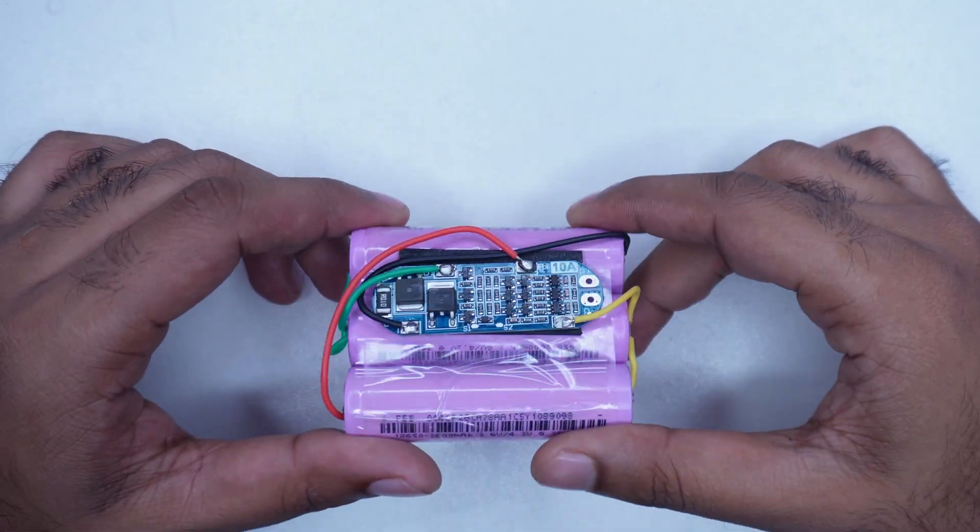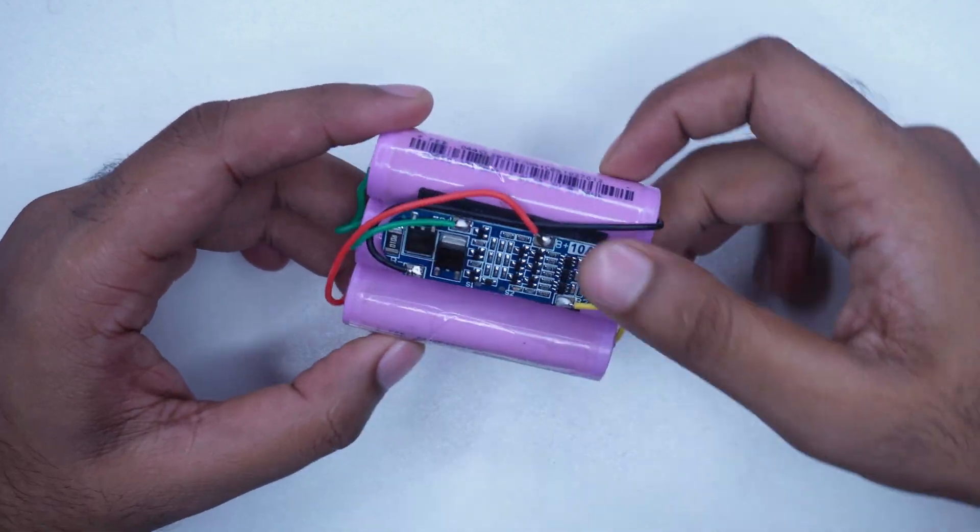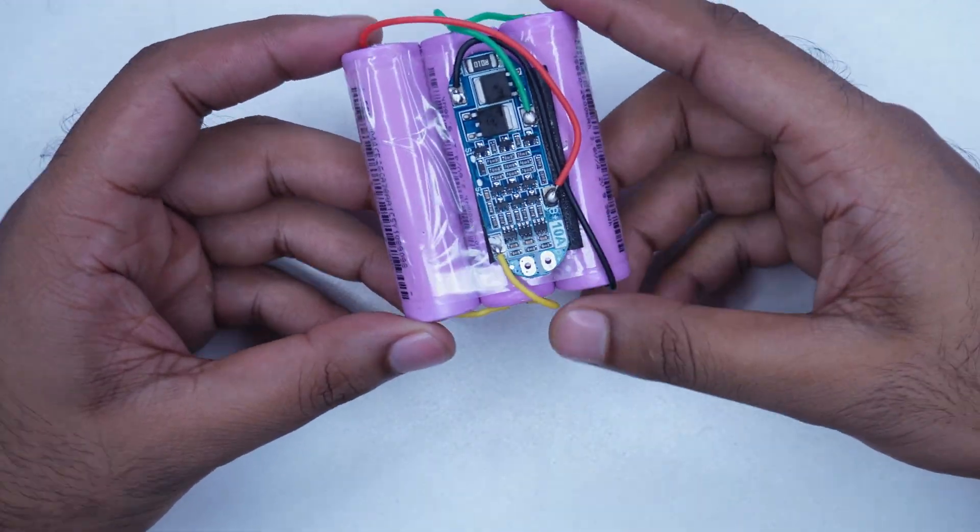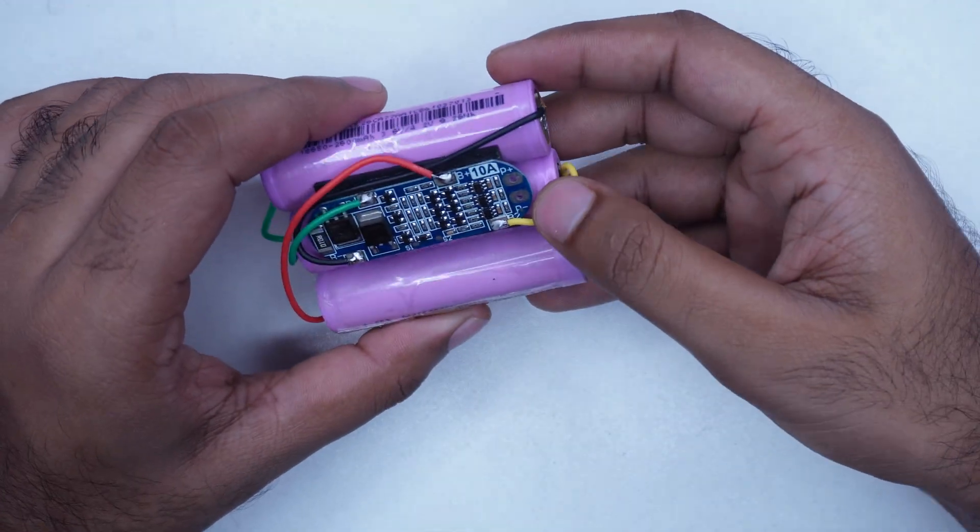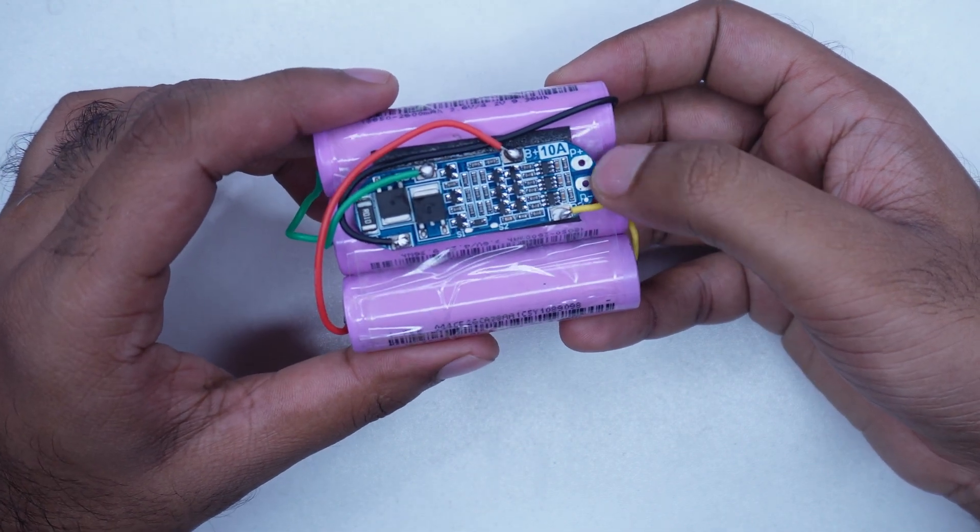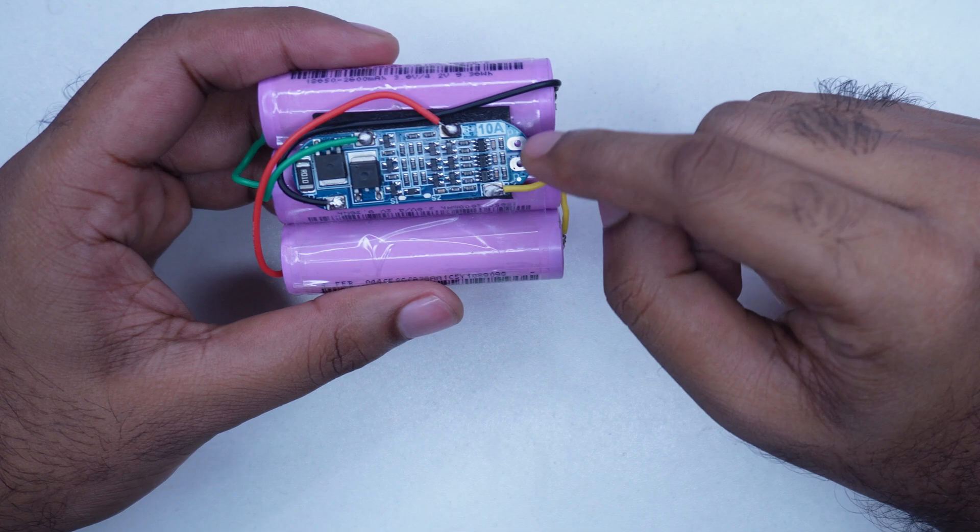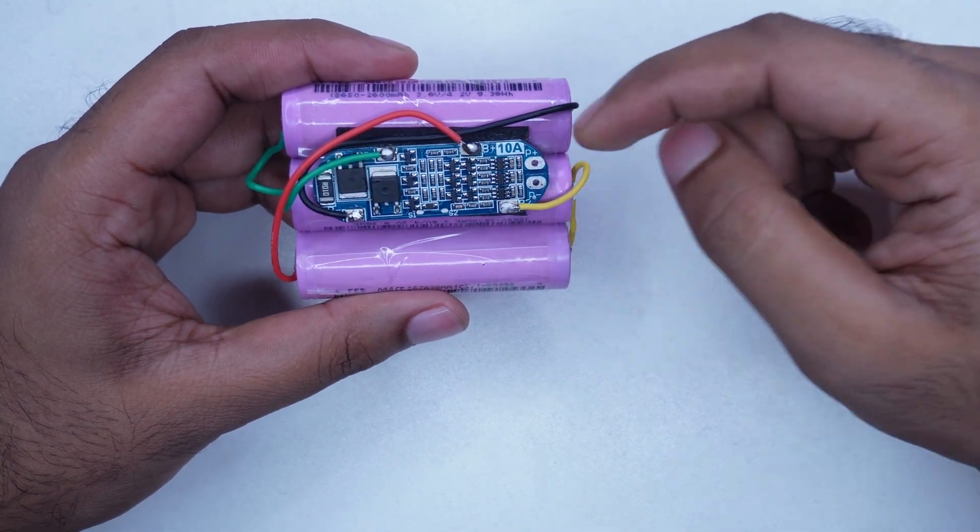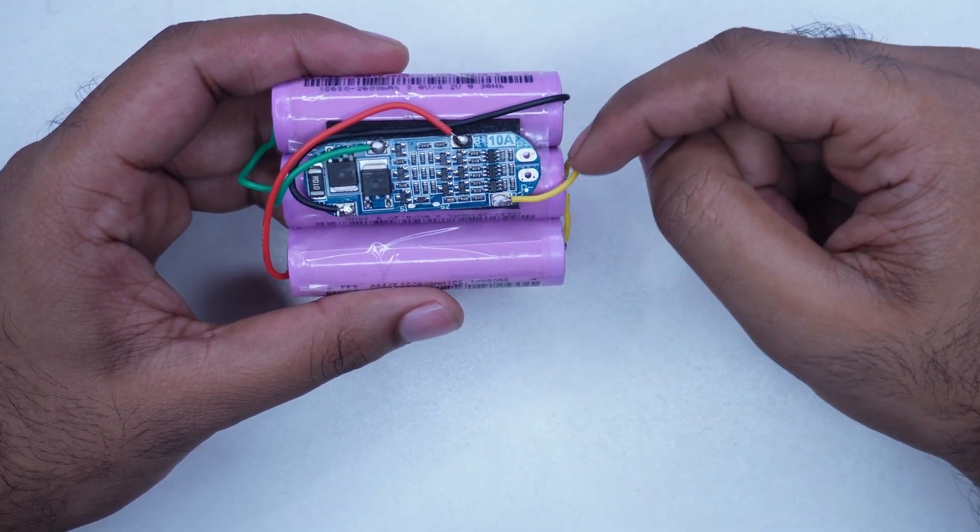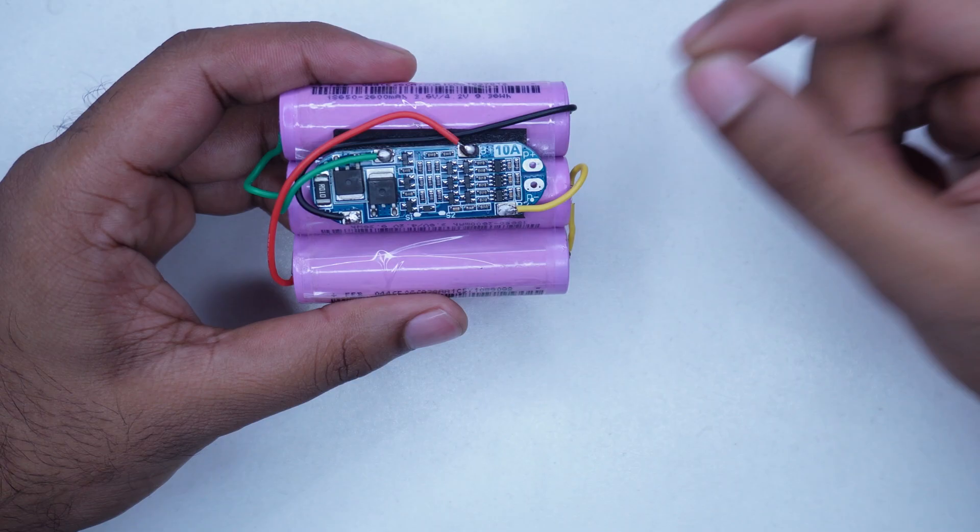So friends, you can see that our battery pack is already made. Here we have the two pins marked P plus and P minus. I still leave them empty. This is our input and output terminal at the same time. With this terminal we will charge the battery, and later we can also take power from the battery.